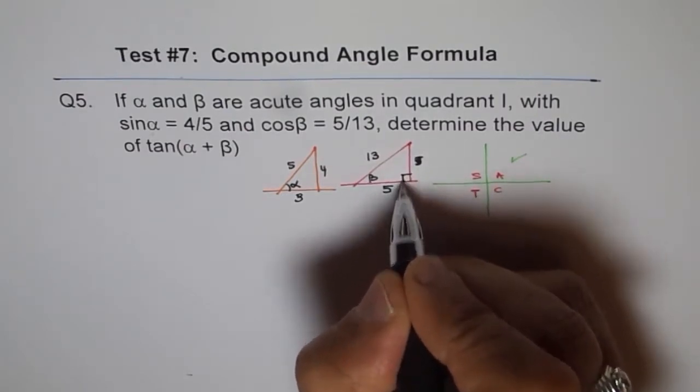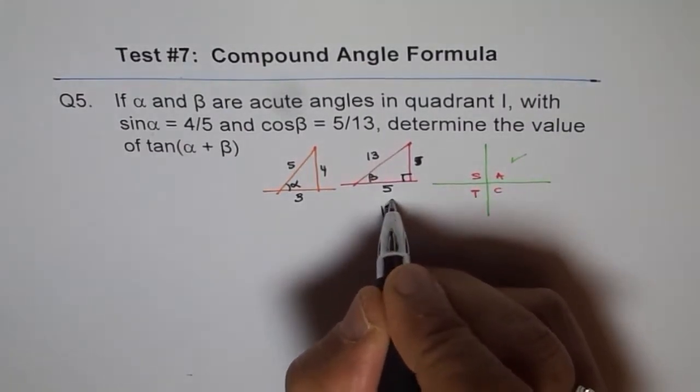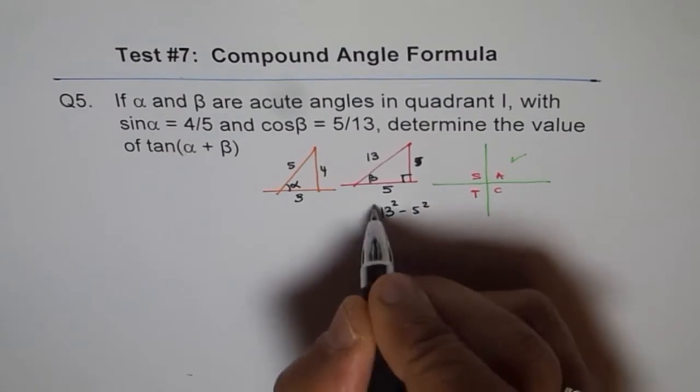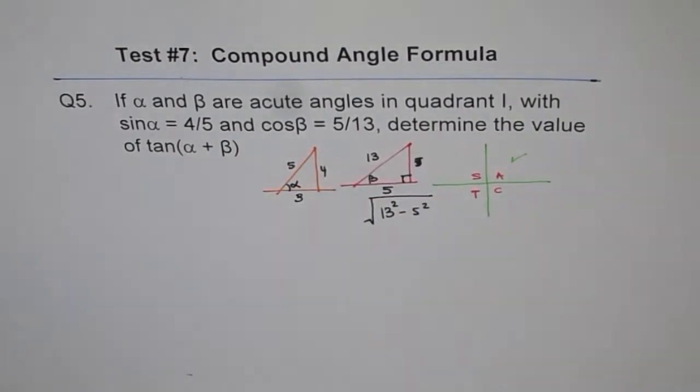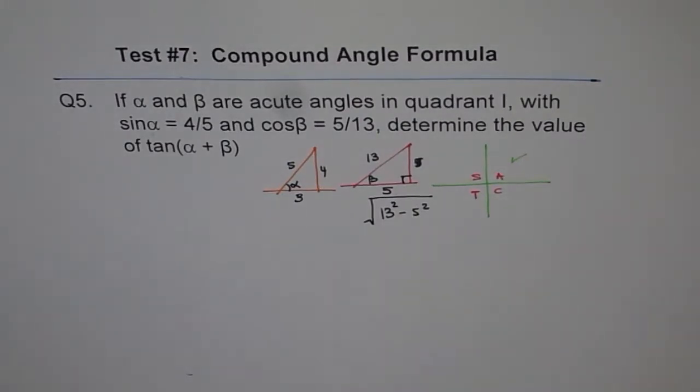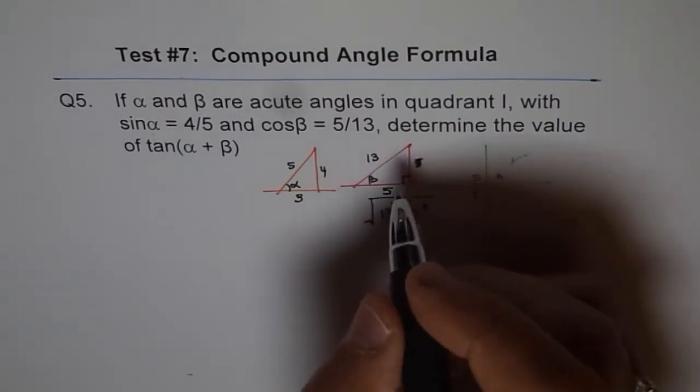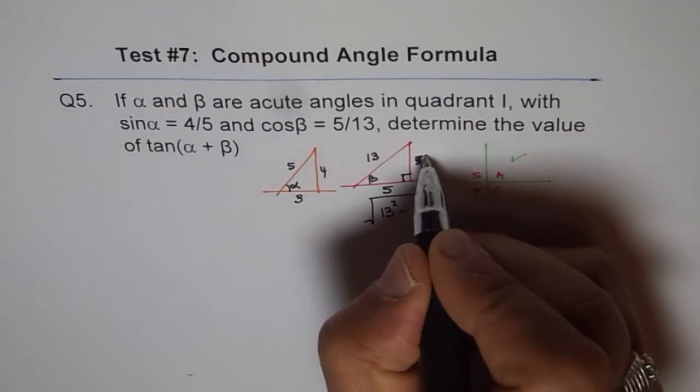That's the right triangle. So this is 13 square minus 5 square square root. So use your calculator to find 13 square minus 5 square square root. So you get 13 square minus 5 square equals 144 and square root is 12. So we get this side as 12.